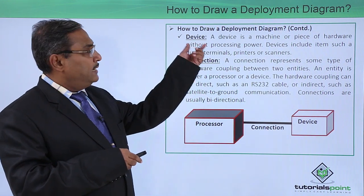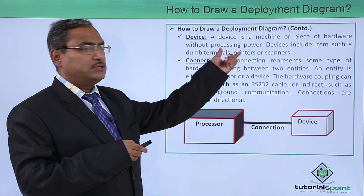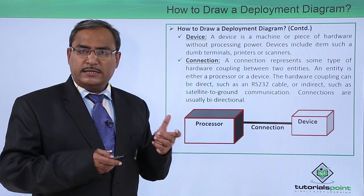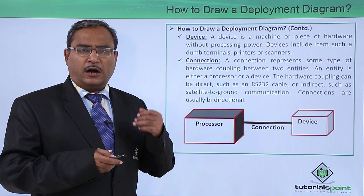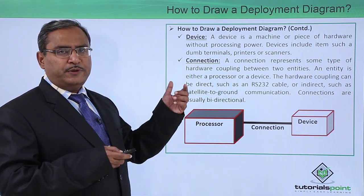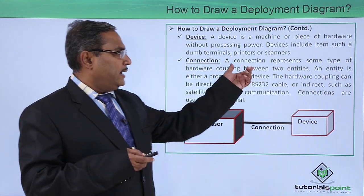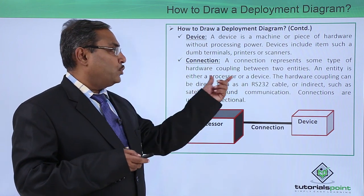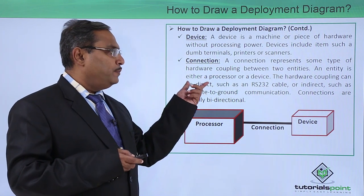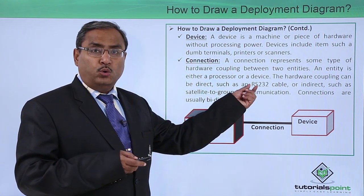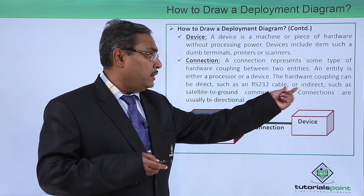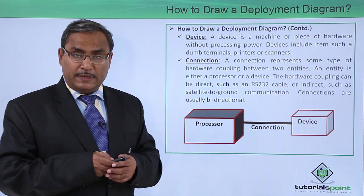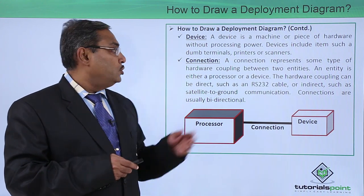A device is a machine or piece of hardware without processing power. Devices include items such as dumb terminals, printers, scanners, card readers, card punchers, and so on. Connections between devices and processors represent some type of hardware coupling between two entities — either a processor or a device. The hardware coupling can be direct, such as an RS-232C port, or indirect, such as satellite-to-ground communication. Connections are usually bi-directional, meaning data can flow in either direction.